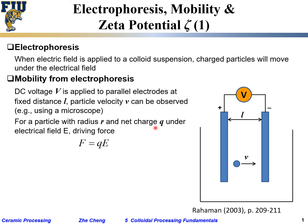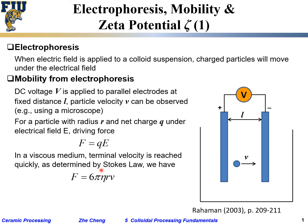For a particle with certain radius and net charge q under an electrical field, the driving force is q times electrical field, which gives you the force. In a viscous medium, in a suspension that always has some viscosity, the particles cannot accelerate indefinitely. At a certain point, terminal velocity will be reached, determined by Stokes law. This is the so-called drag force.